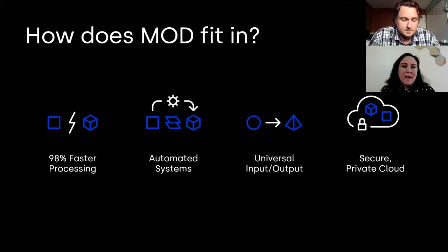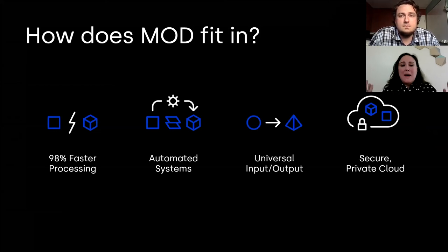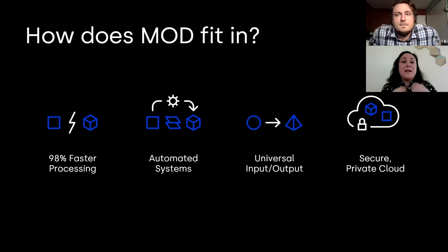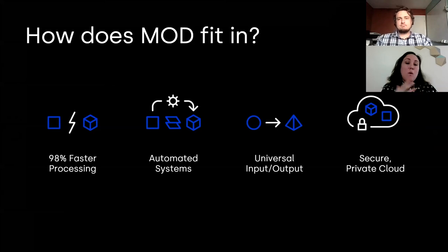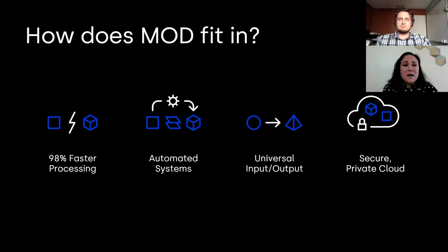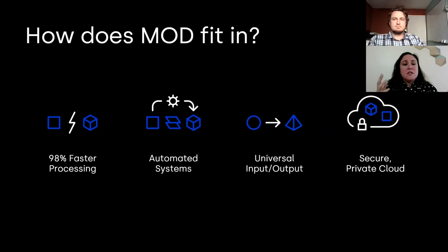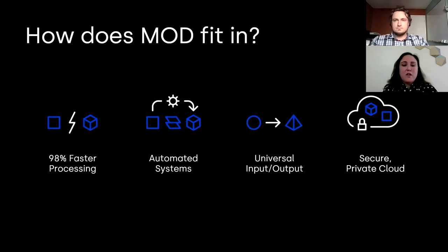We've alluded to a lot of this, but how do we fit in? Why is this important to us? It's important to us because, as I mentioned earlier in the talk, capture is not our specialty — we are very familiar with capture and we understand the best practices. We understand how to enable others to capture more effectively and increase their capabilities. But what we are is a processing solution. We have distributed processing, so we are 98% faster in a lot of cases. The systems are automated, so it's drag-and-drop of the imagery data into the project folder — it uploads on an encrypted system directly to our private secure cloud, we process to your specifications, and we deliver it back to you.